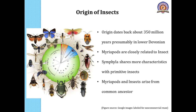The origin of insects dates back about 350 million years ago, presumably in the lower Devonian period. On the basis of our understanding of arthropod morphology, the myriapods appear to be closely related to the group known as the insects. Of the myriapods, the symphyla shares more characteristic features in common with the primitive insect.